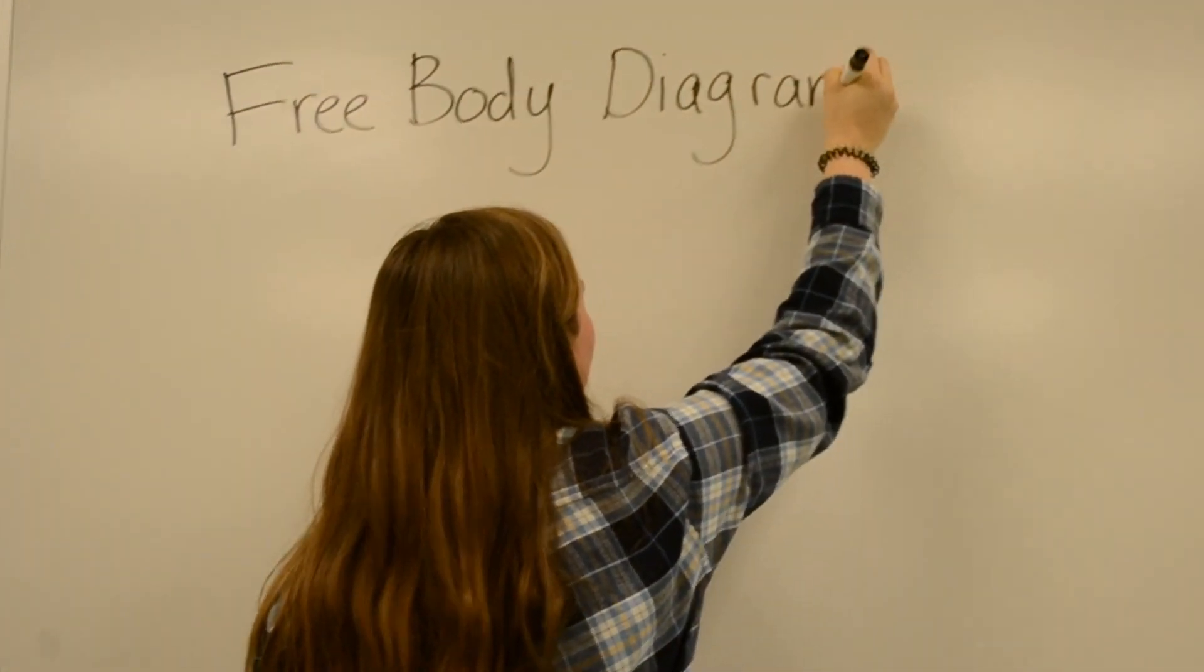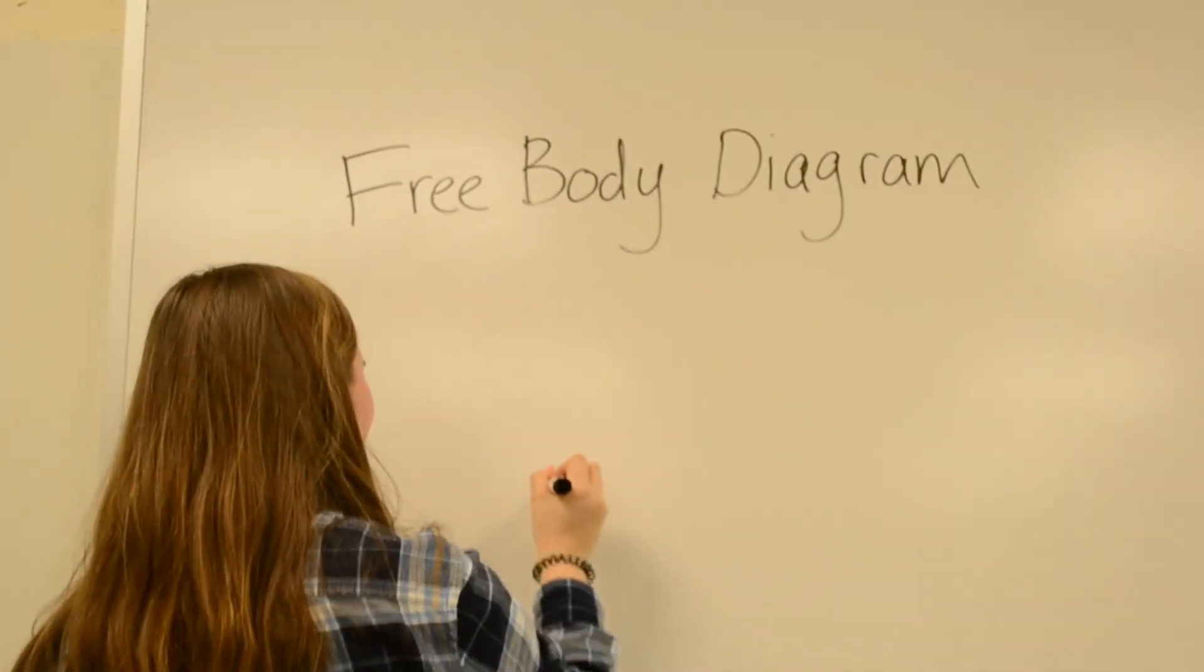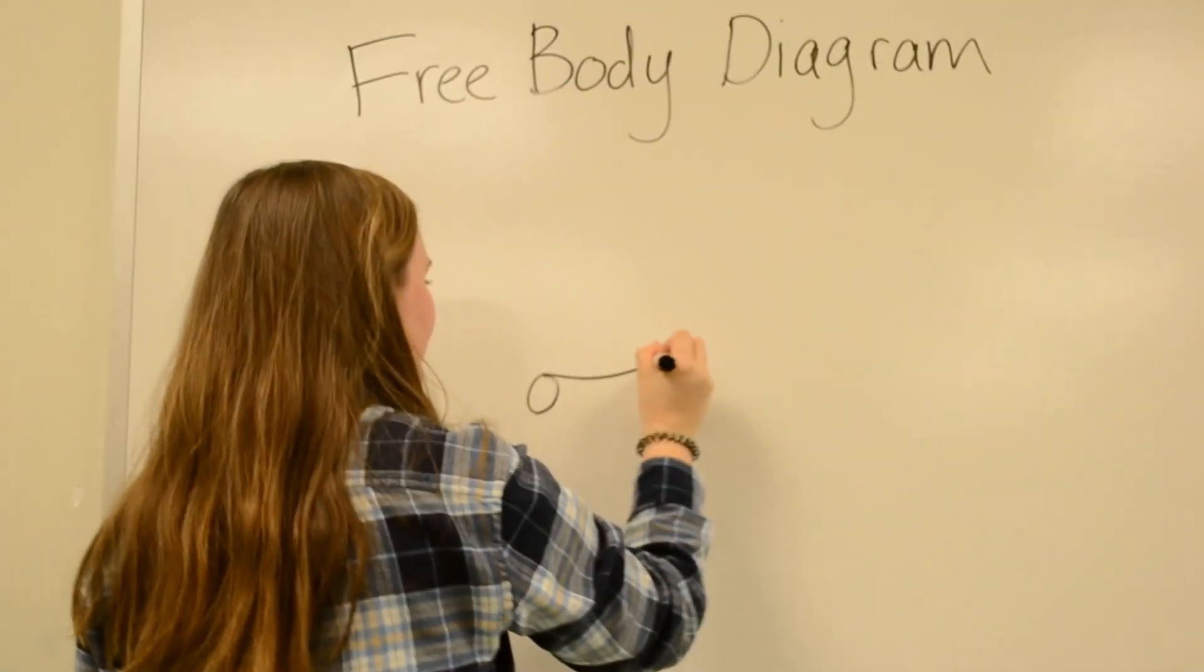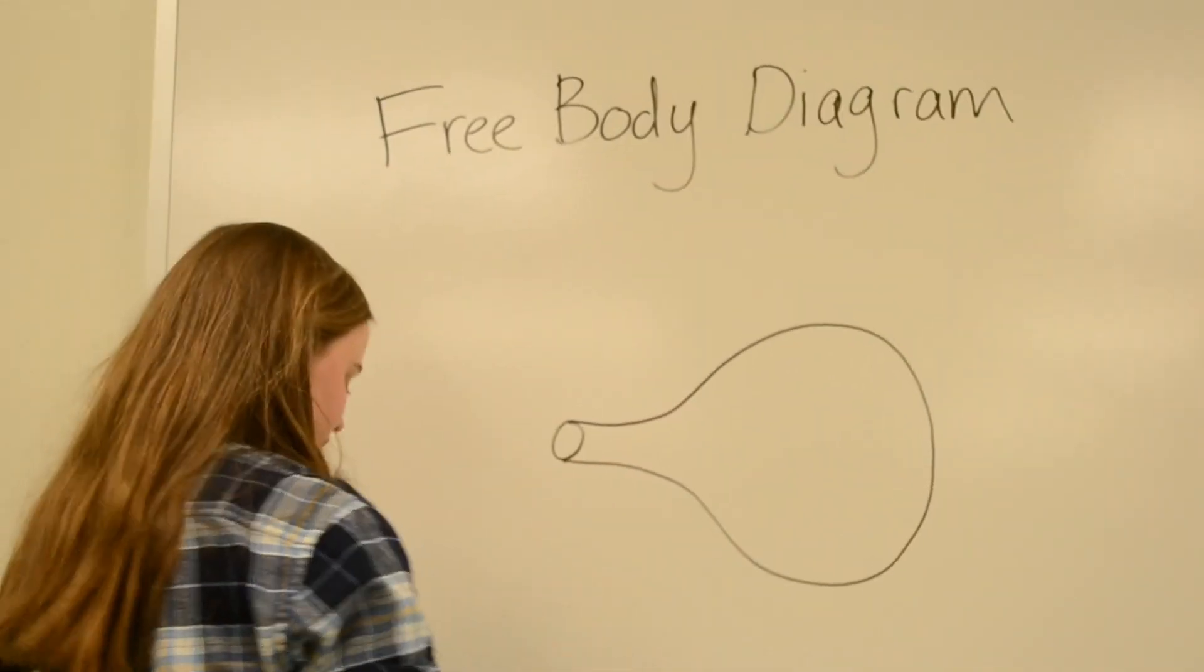Whenever we analyze the motion of any system, we will draw a free body diagram, and in some cases, like this one, we'll use a mass velocity diagram. So first, let's start with the free body diagram.